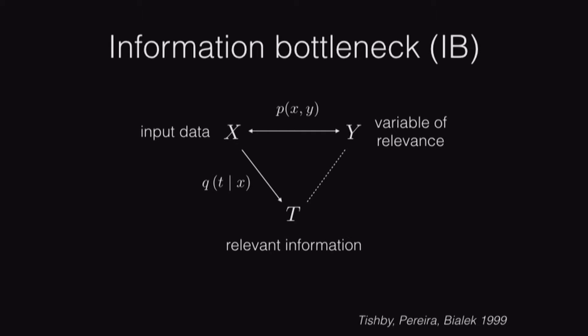Throughout, I'll be using P for distributions that are fixed and given, Q for ones that we can choose through some optimization. From a statistics point of view, you can think about this as generalizing the notion of a sufficient statistic to a soft sufficient statistic, so T is a soft sufficient statistic for estimating Y.